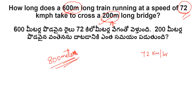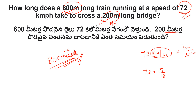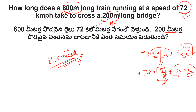We have speed as 72 kilometers per hour. To convert to meters per second, we multiply by 5/18. So 72 multiplied by 5/18: 8 into 18 cancels, 4 into 5 gives 20. That means 20 meters per second.